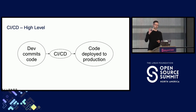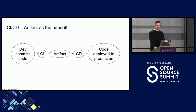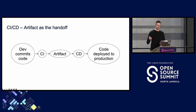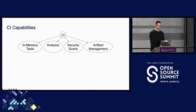We have code commit, we have deploy, and we have this thing in between that is CI/CD — it kind of just happens. But we're really going to drill into that and break it down. One caveat I want to call out is the way we've been thinking about this: the artifact is the handoff between CI and CD. The CI part of the pipeline is all about creating the best artifact that it can, and the CD part is about taking that artifact and doing things with it.